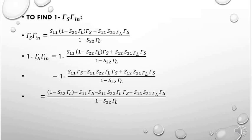To find (1 minus gamma_s·gamma_in), the product gamma_s·gamma_in equals [S11·(1 minus S22·gamma_L)·gamma_s plus S12·S21·gamma_L·gamma_s] divided by (1 minus S22·gamma_L). Introducing 1 minus on both left-hand side and right-hand side, (1 minus gamma_s·gamma_in) equals 1 minus the above expression. Taking the LCM, this becomes [1 minus S22·gamma_L minus S11·gamma_s plus S11·S22·gamma_L·gamma_s minus S12·S21·gamma_L·gamma_s] divided by (1 minus S22·gamma_L).